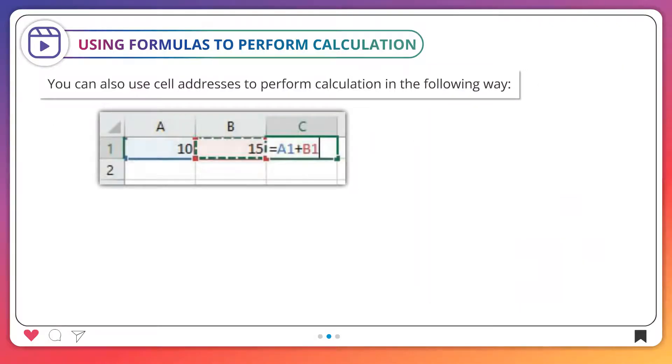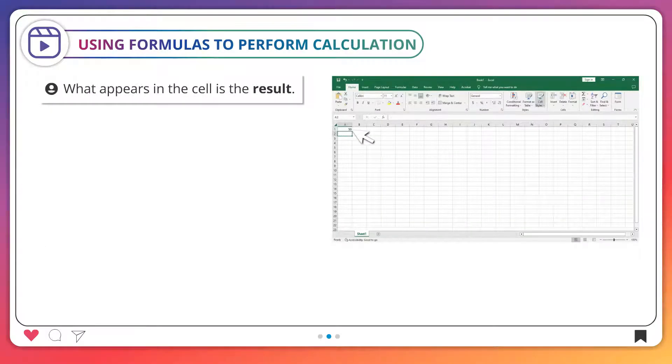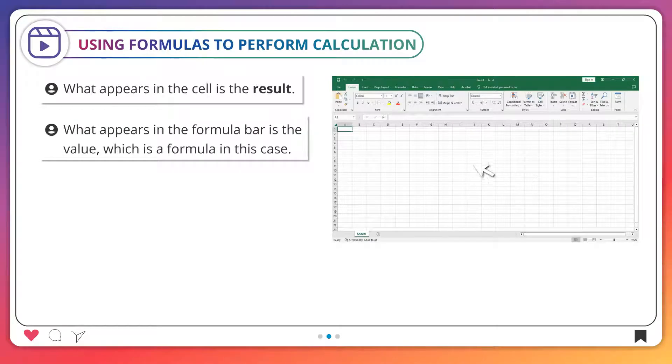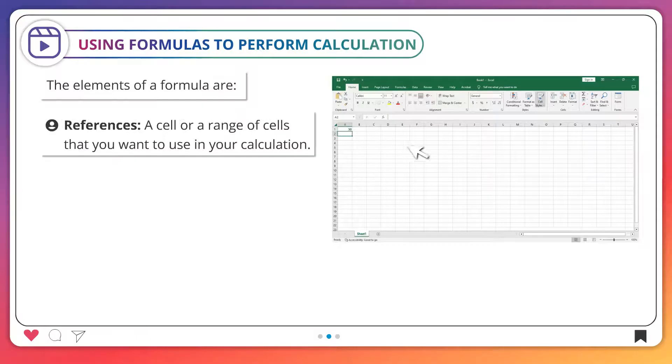You can also use cell addresses to perform calculation in the following way. Notice that when the cell is selected, the formula bar shows the formula you just typed. What appears in the cell is the result. What appears in the formula bar is the value which is a formula in this case. The elements of a formula are references: a cell or a range of cells that you want to use in your calculation.